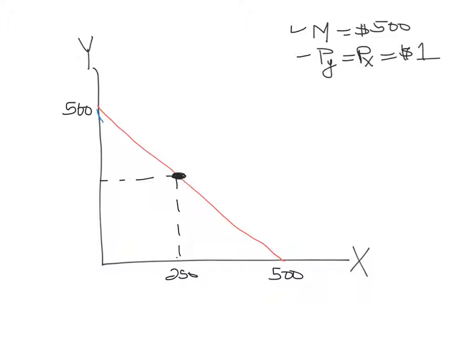So the budget line would pivot and it would be anchored at $250 along the horizontal axis, and the consumer is probably going to be worse off.